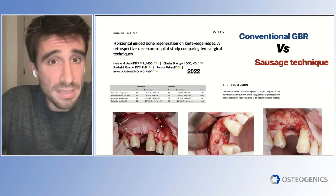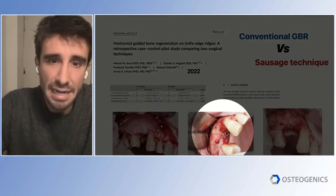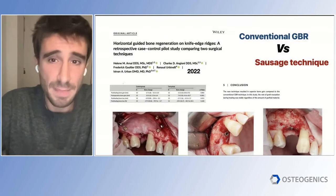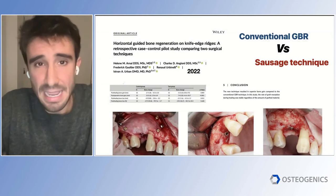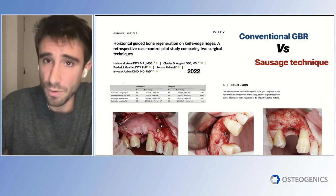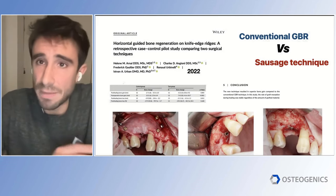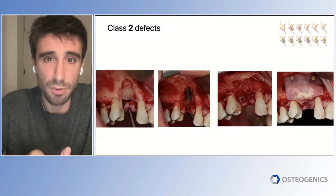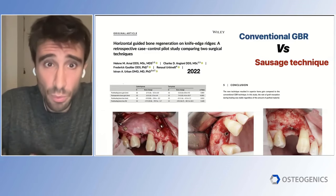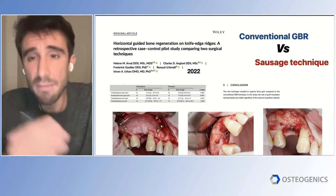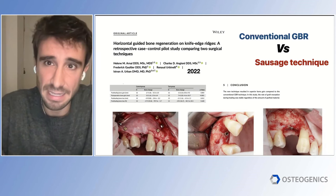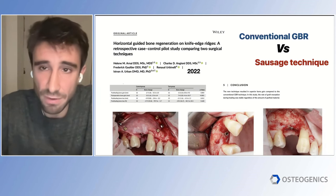By following this protocol — the sausage technique — we are able to achieve a very nice bone gain, even going outside of the bony housing. Evidence and studies show that when comparing conventional GBR with the sausage technique for horizontal defects, we gain more bone with the sausage technique because of the improved stability that the stretching of the membrane provides.